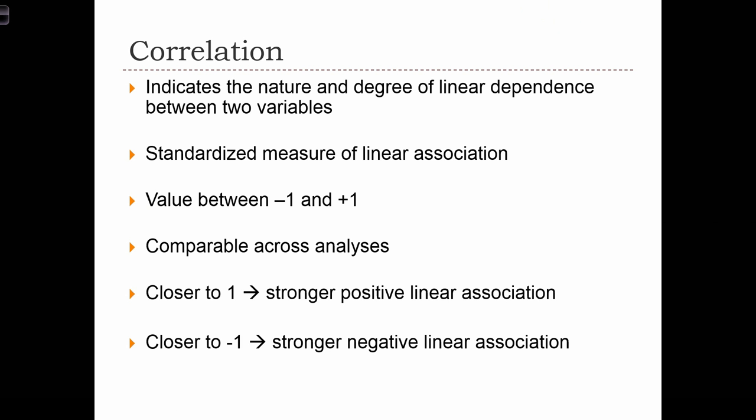Correlation is a statistic that indicates the nature and degree of linear dependence between two variables. It is a standardized measure of linear association. The correlation statistic can be any value in the range from minus 1 to plus 1.